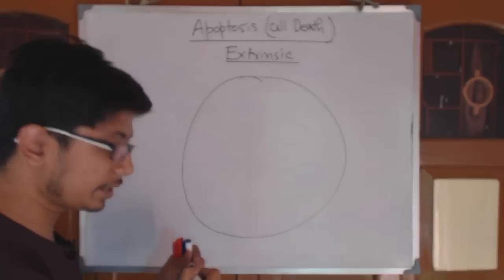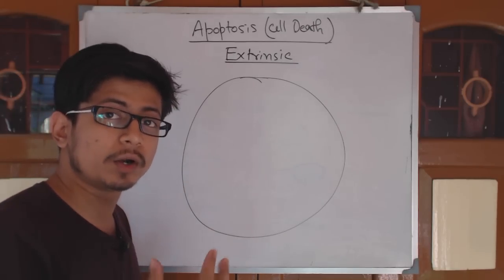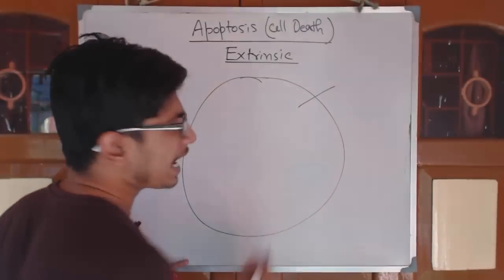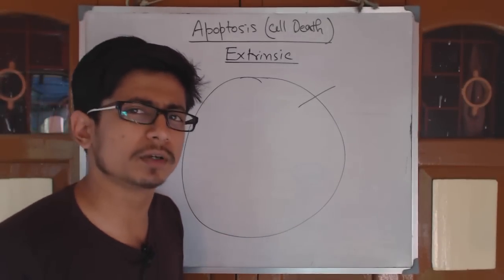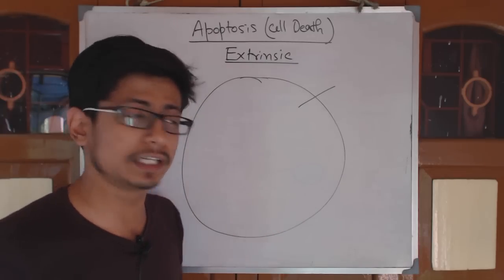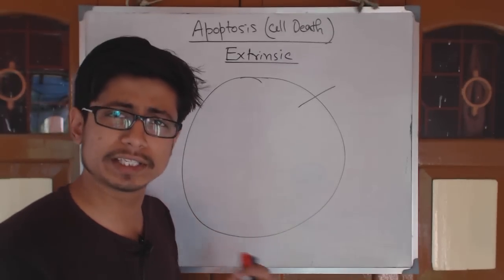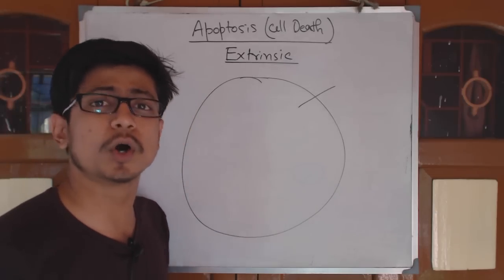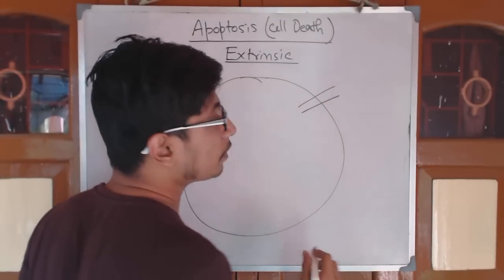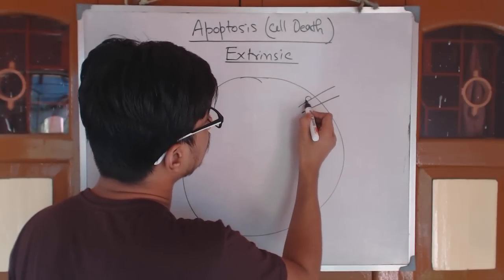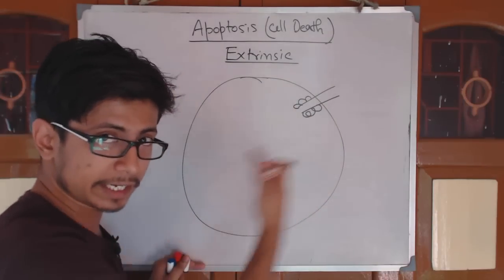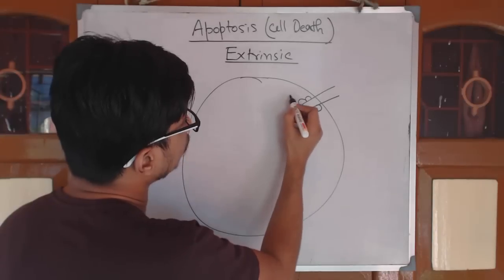What happens in the extrinsic pathway is the source of signal originates from outside the cell. This cell has specific receptors. Actually, a cell has many receptors outside: some receptors for growth responses, some for life signals or death signals, some for interaction with other cells, and some for hormone reception. Multiple receptors are there. In this case, we're talking about a very special kind of receptor with a specific domain.